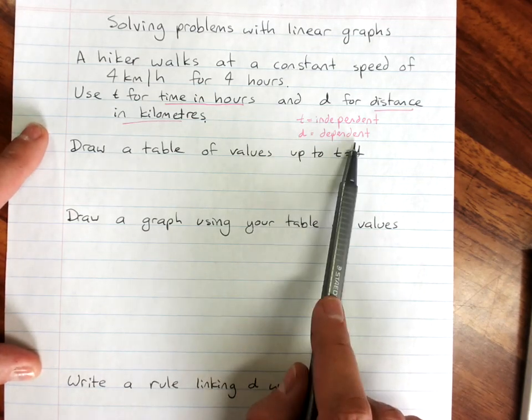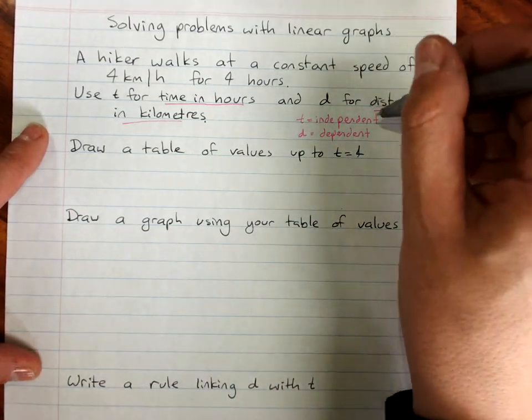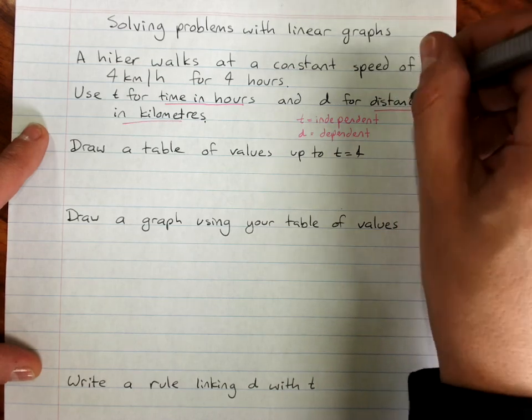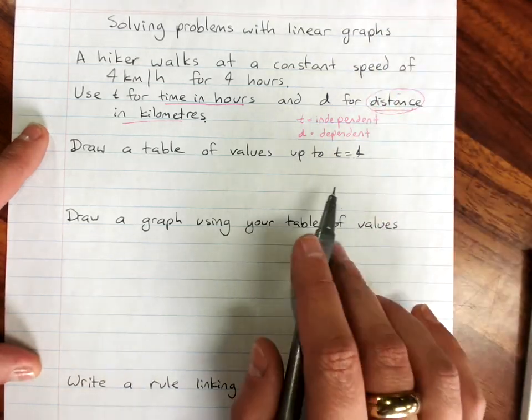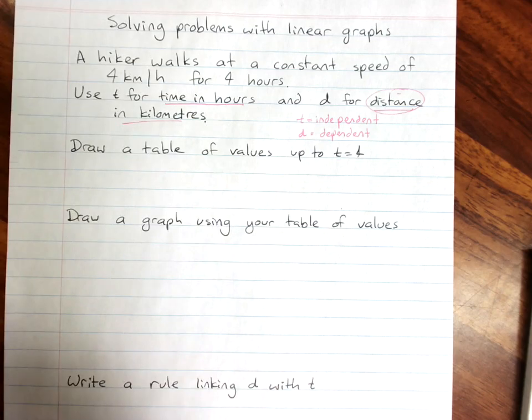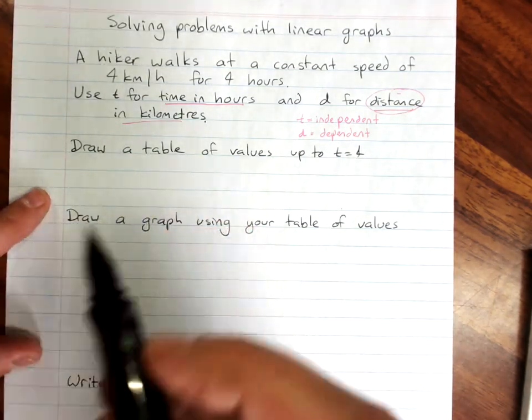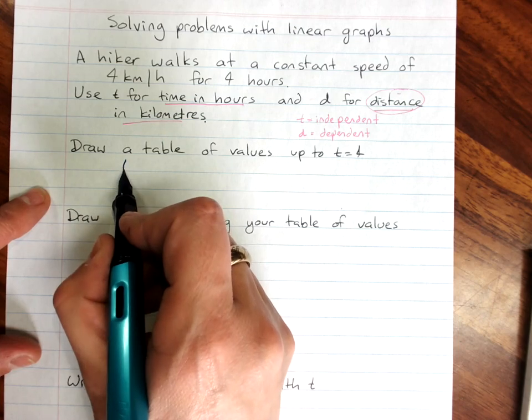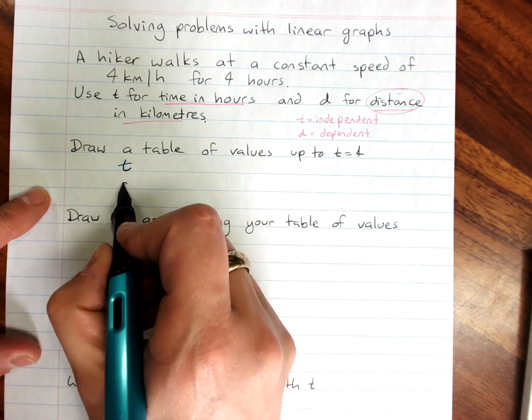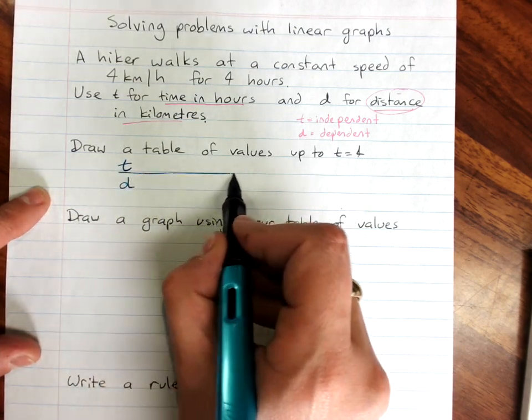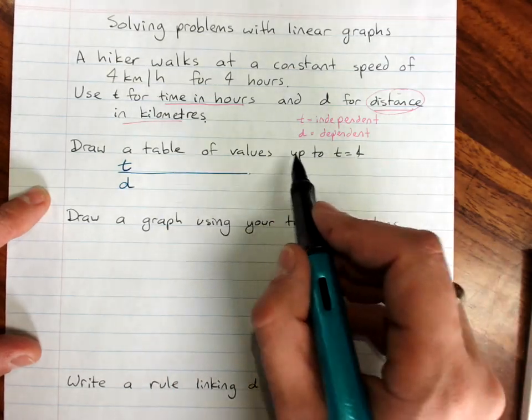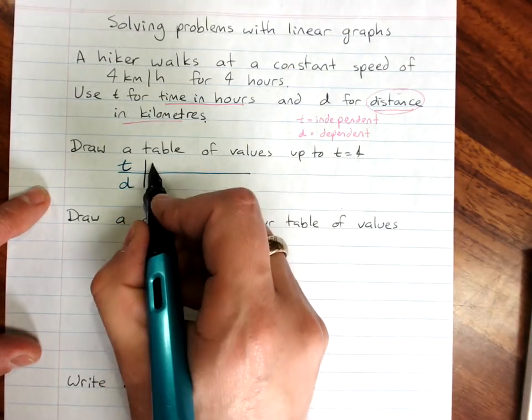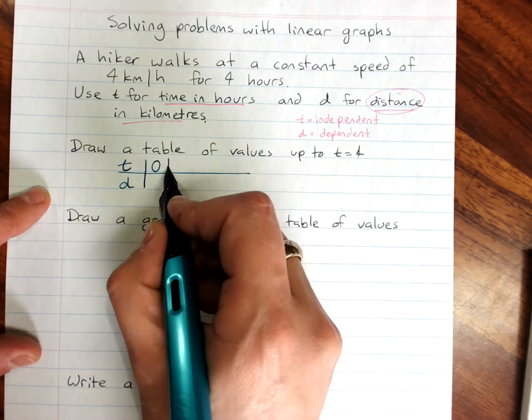Now when we know we've got dependent, so our distance is dependent, when we do our table of values, we know we always start with our independent variable on top. Time and distance. They want a table of values up to t equals 4. Make sure you include 0.